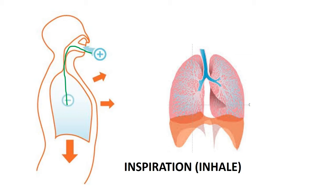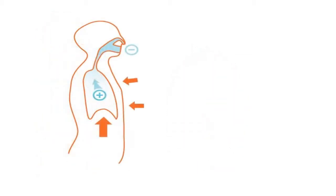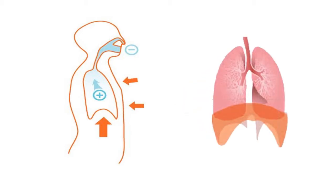Next, the action takes place in reverse order. The chest wall lowers inward and the diaphragm relaxes back into the dome shape. With these two actions, the chest cavity decreases and the pressure increases inside the lungs, and that pressure pushes the air outside. This is known as exhale, or expiration.